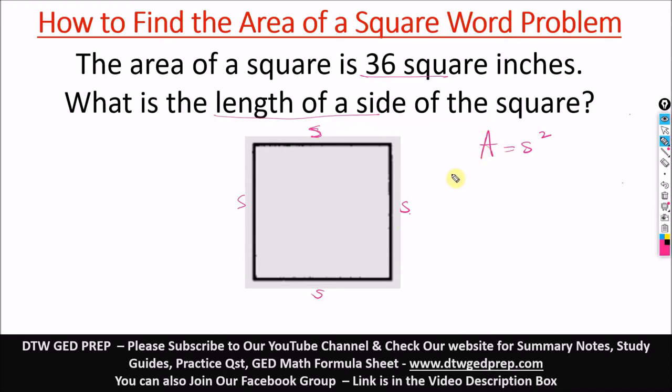We are given the area, so what we do here is you put in your 36 here which is the area of the square, which is A equals s squared. So we're looking for s, not s squared.